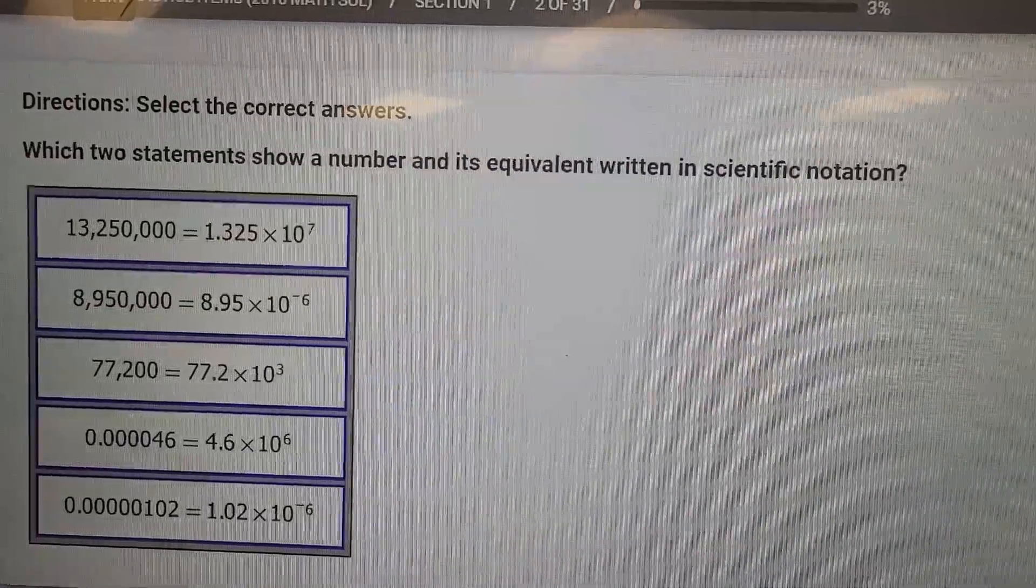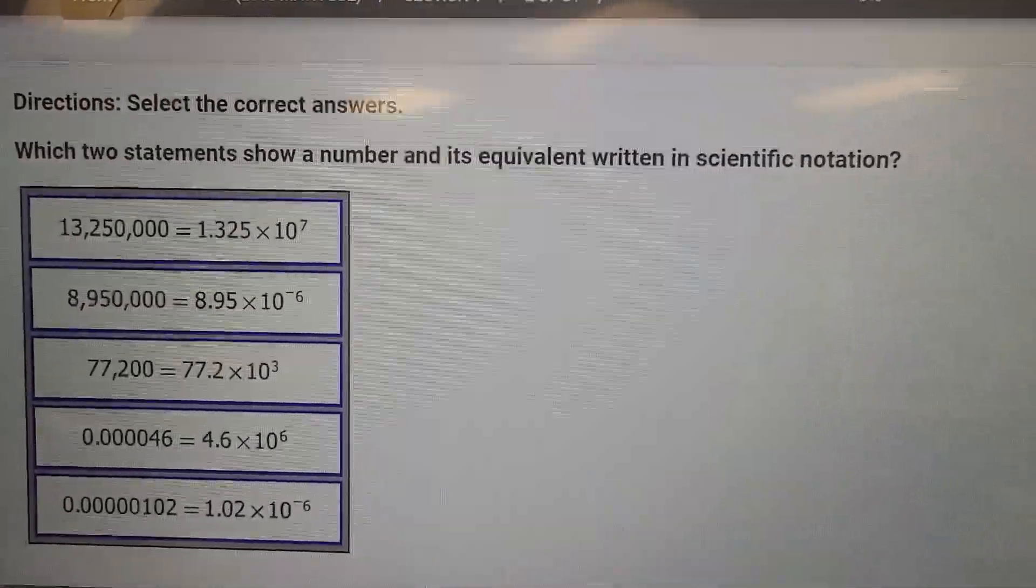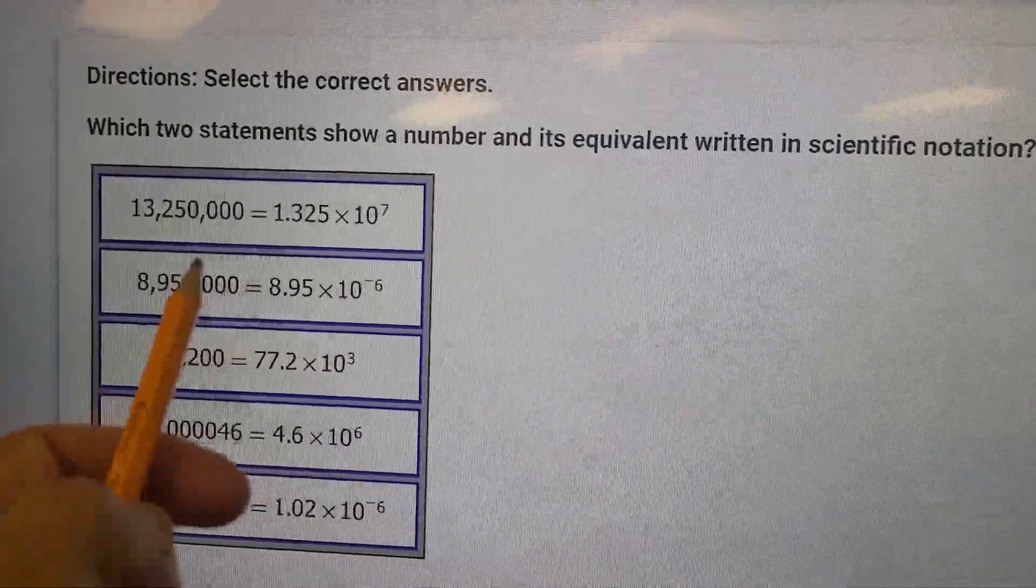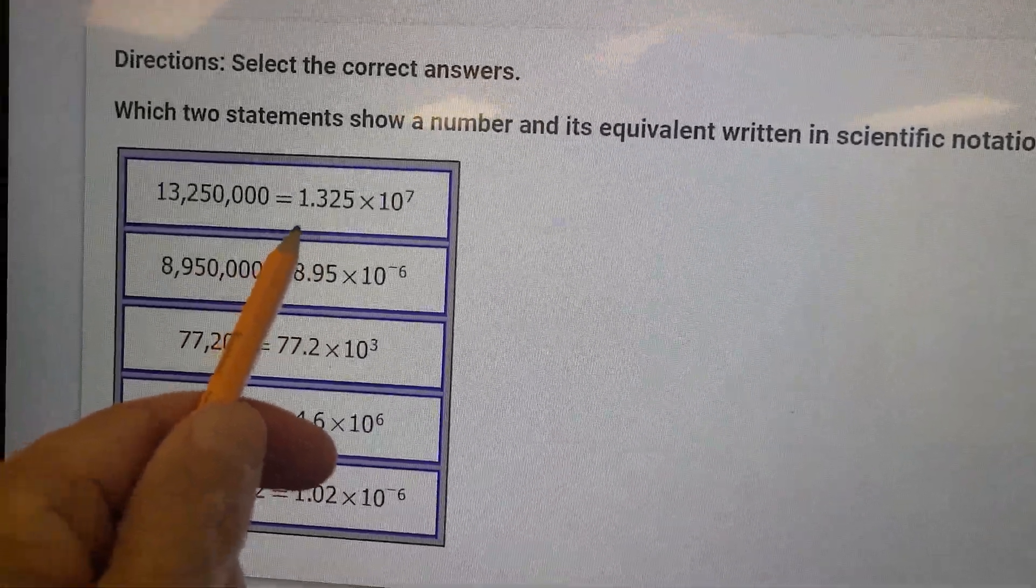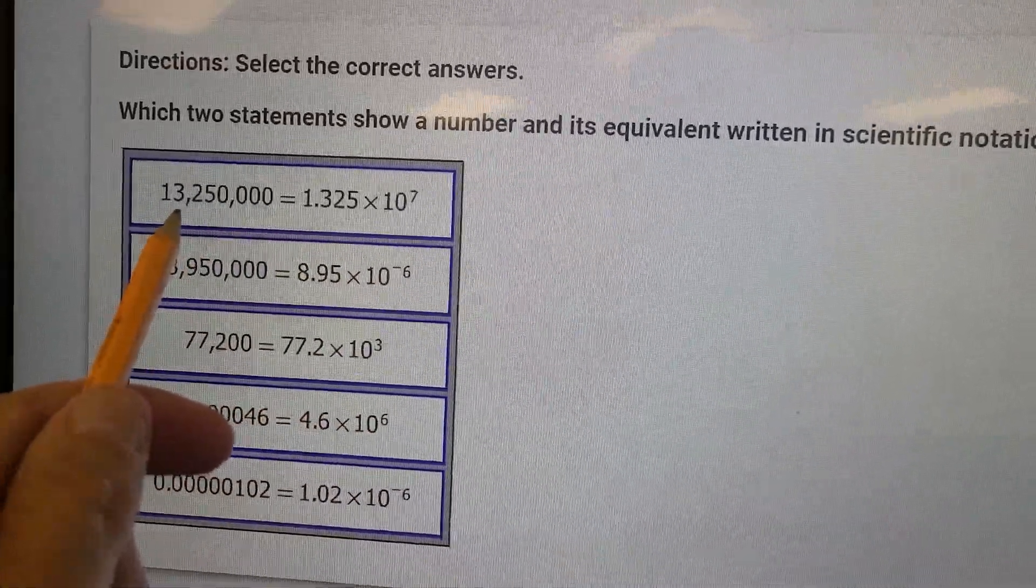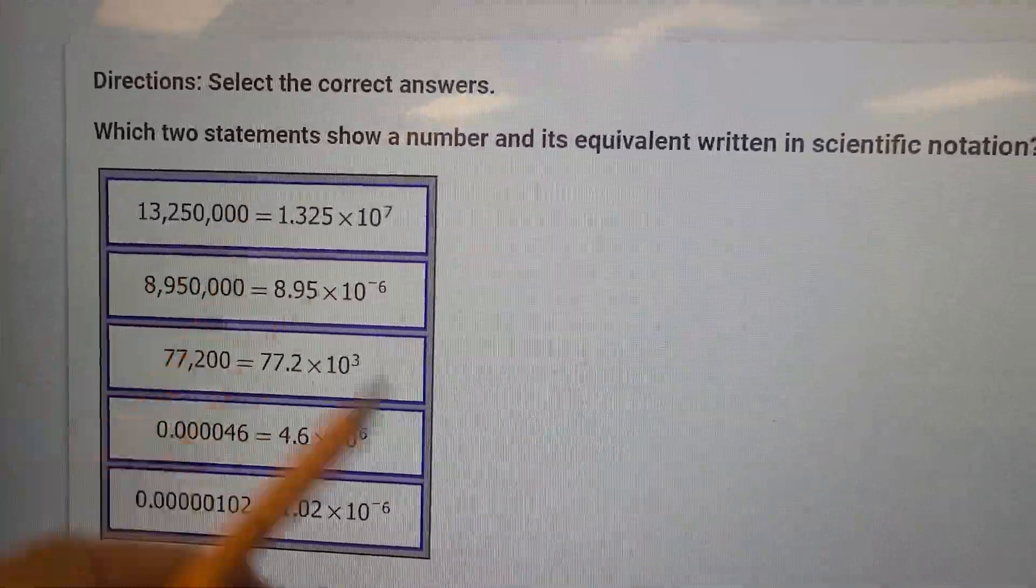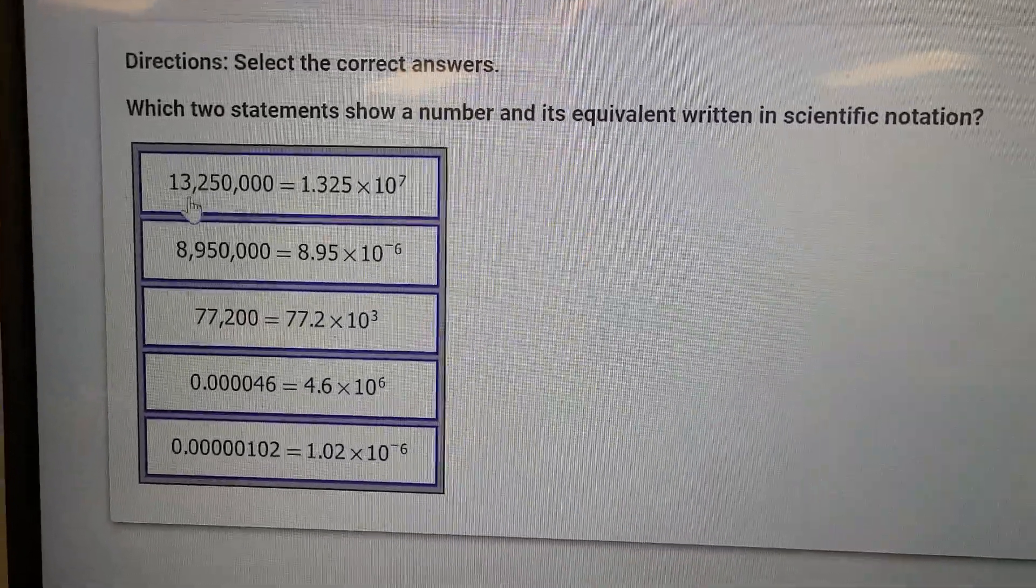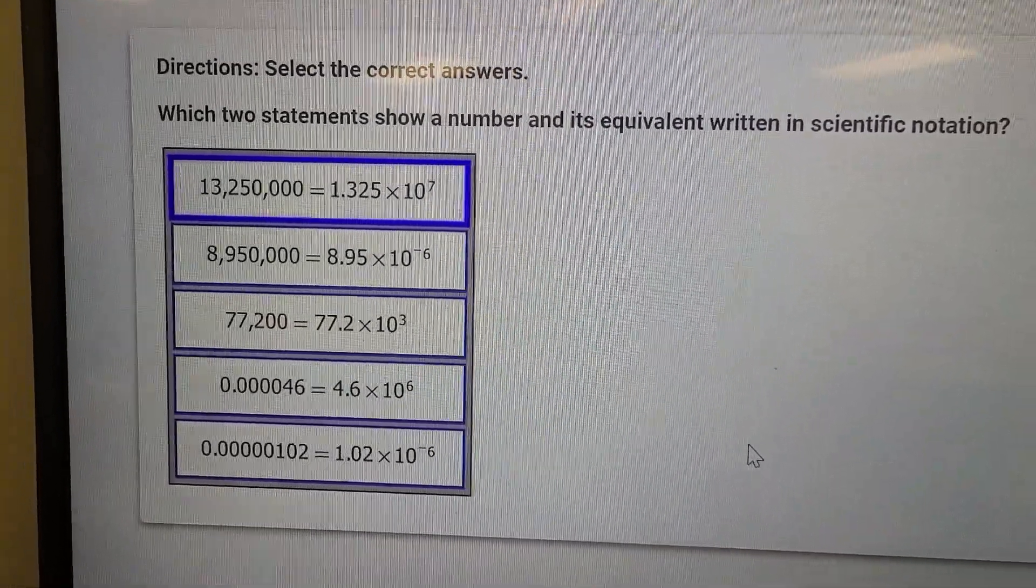Here's another one: which two statements show a number and its equivalent written in scientific notation? Remember, scientific notation can only have one number in front of the decimal place. So this is 1.325 × 10^7. If you count seven places, we like that one. I don't need to write a whole lot on scrap paper. I can kind of eyeball this and I know that one's true.